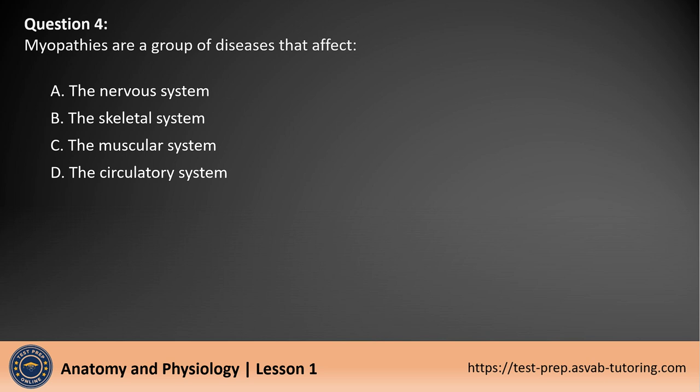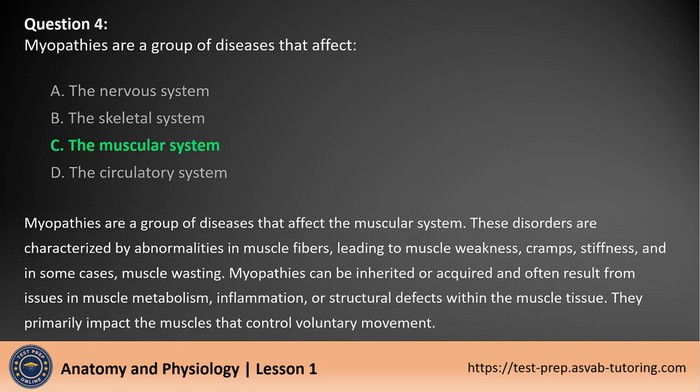Question 4. Myopathies are a group of diseases that affect the muscular system. These disorders are characterized by abnormalities in muscle fibers, leading to muscle weakness, cramps, stiffness, and in some cases, muscle wasting. Myopathies can be inherited or acquired and often result from issues in muscle metabolism, inflammation, or structural defects within the muscle tissue. They primarily impact the muscles that control voluntary movement.